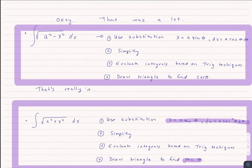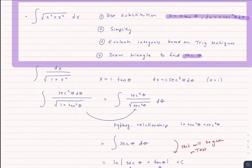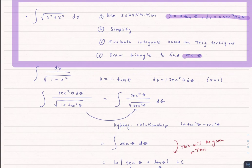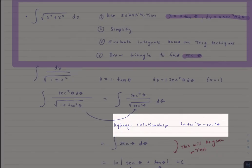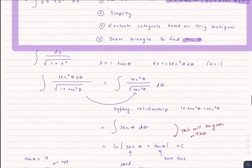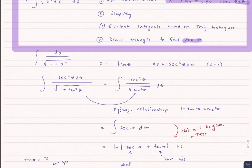Now that we have this basic framework, let's do an example. We'll evaluate the integral of dx over the square root of 1 plus x squared. Notice it doesn't matter that it's in the denominator — it has the form square root of a squared plus x squared. We let x equal tangent theta, where a equals 1. Then dx is secant squared theta d theta. Using the Pythagorean identity 1 plus tangent squared theta equals secant squared theta, we can rewrite this as secant squared theta divided by the square root of secant squared theta, which is just secant theta. So we get the integral of secant theta d theta, whose result is the natural log of the absolute value of secant theta plus tangent theta.